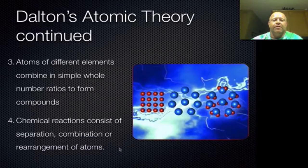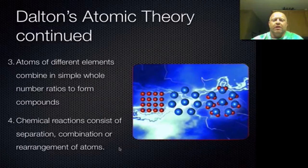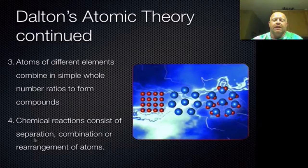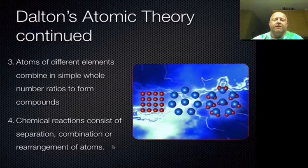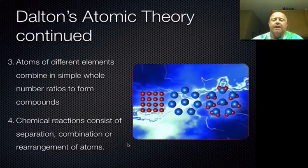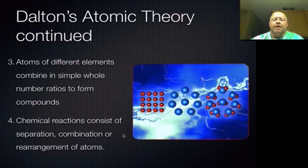In the early 1800s, the concept of things like lead turning into gold through alchemy was still relatively prevalent. So to come out and say that chemistry can only separate atoms, combine them, or rearrange them — basically saying you can't turn one thing into something else magically, that it's all just a rearrangement of atoms — was a pretty powerful statement for that time period. Even though today we see this as common sense, back then it really wasn't.